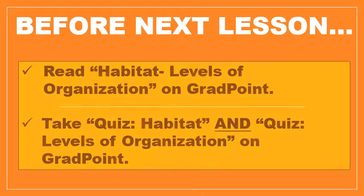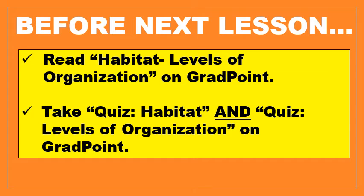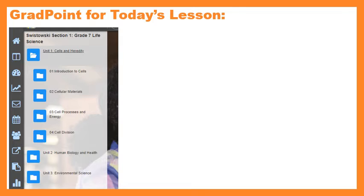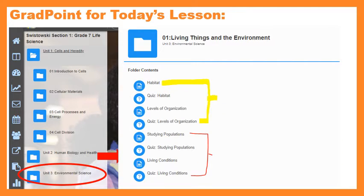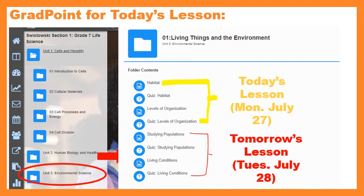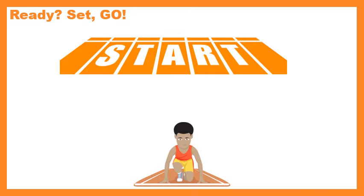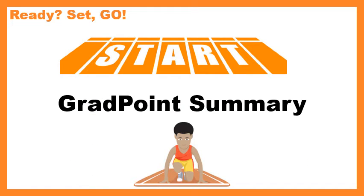Before the next lesson we need to read 'Habitats' and 'Levels of Organization' on GradPoint and take the quizzes associated with those two chapters. Today's a little different in that we're finally on Unit Three. Click on that, the screen will pop up, click on folder number one — we're going to do the yellow today and the red is for tomorrow. I'm going to start with a GradPoint summary, which is just an outline of the most important points you should understand by the end of the lesson.